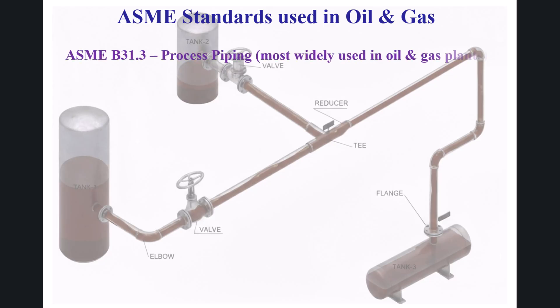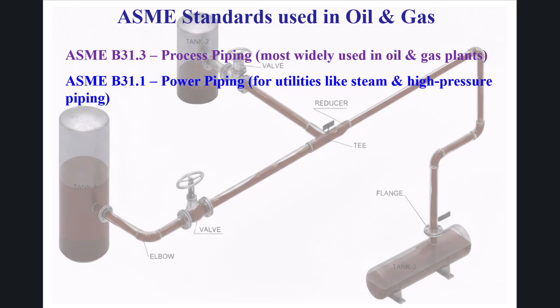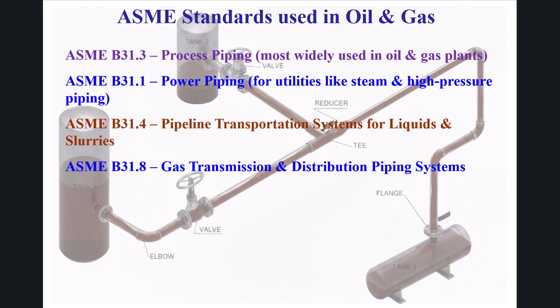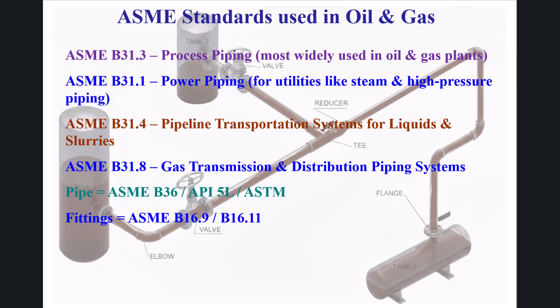ASME standards used in oil and gas: ASME B31.3 (Process Piping) is the most widely used in oil and gas plants. ASME B31.1 (Power Piping) is used for utilities like steam and high-pressure piping. ASME B31.4 covers pipeline transportation systems for liquids and slurries. ASME B31.8 covers gas transmission and distribution piping systems. For pipe material: ASME B36, API 5L, and ASTM standards apply. For fittings: ASME B16.9 and B16.11. For valves: ASME B16.34 and API series.